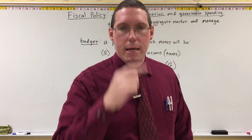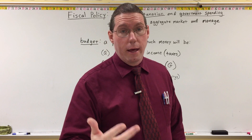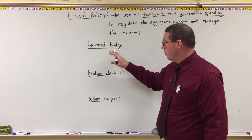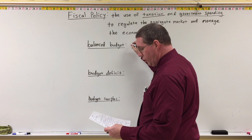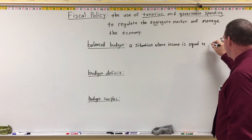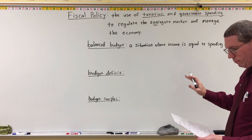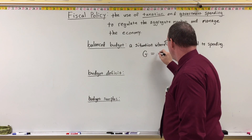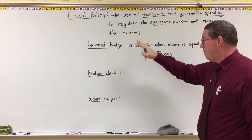These are the three possibilities for the federal budget. A balanced budget is a situation where income equals spending — government spending equals taxes. However much money the government is collecting is exactly how much it is spending. A budget deficit is a situation where spending exceeds income — the government is spending more money than the taxes it is receiving, so government spending is greater than taxes.